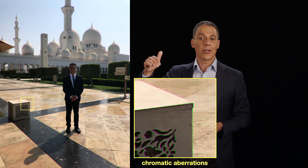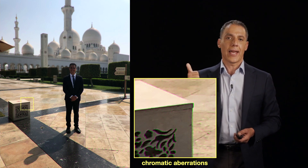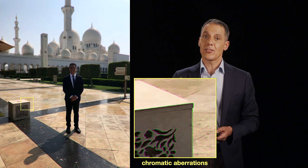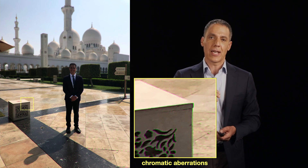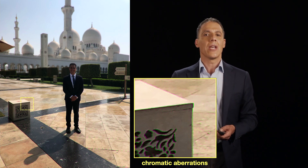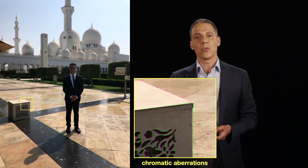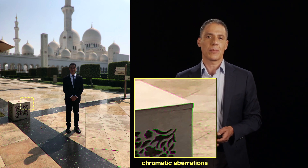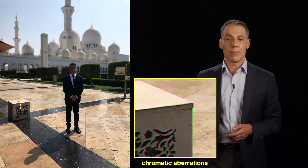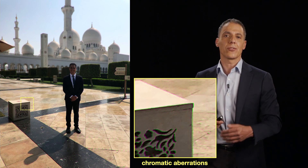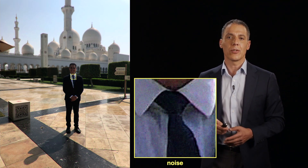We also understand where color fringing comes from. That's Snell's law — it has to do with the fact that light bends when entering a lens and is focused. Light bends proportional to wavelength, so the red, green, and blue parts of the visible spectrum are being imaged differently across the three channels in a color image.